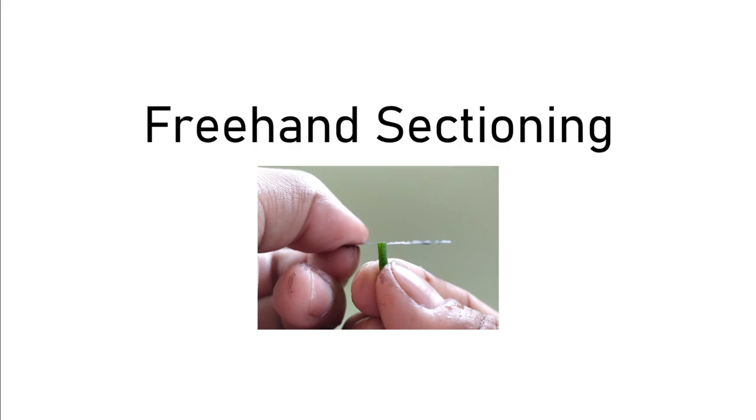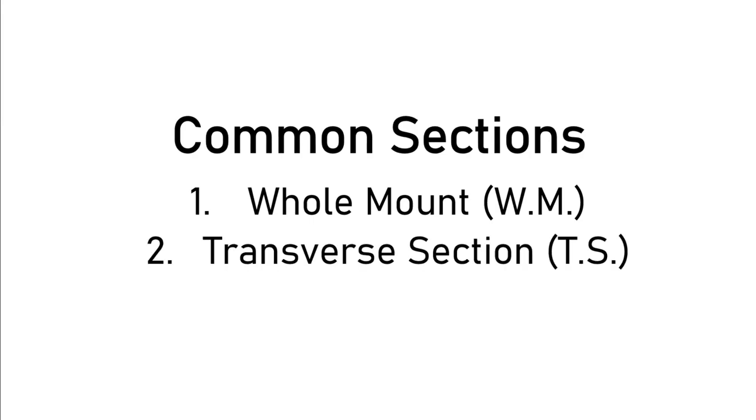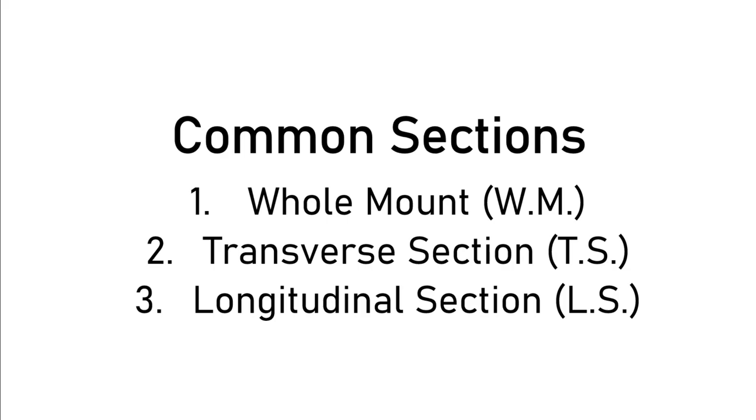There are three most commonly used plant sections for microscopic studies in botany: whole mount material, transverse section or TS material, and longitudinal section or LS material.